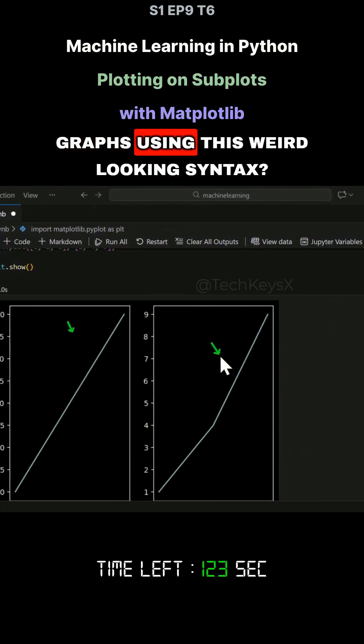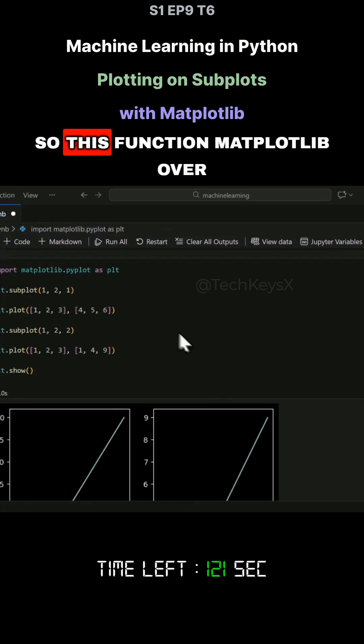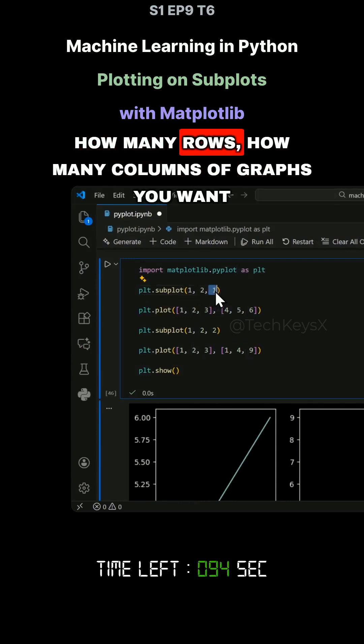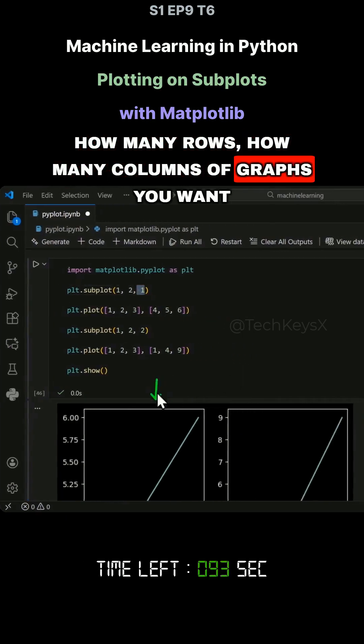So how are we to get to these two graphs using this weird looking syntax? This function Matplotlib over here takes in the parameters for how many rows, how many columns of graphs you want.